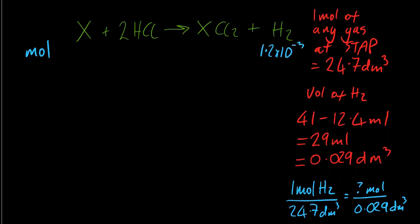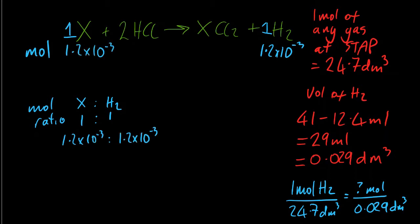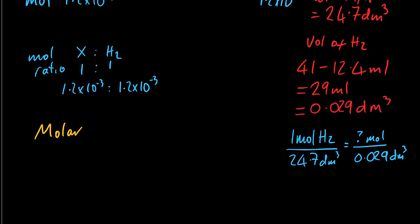But I really want to know the moles of metal that I used. So it's a one-to-one ratio between the moles of metal and the moles of hydrogen. And if I know the moles of hydrogen and the mass, I can get the molar mass.